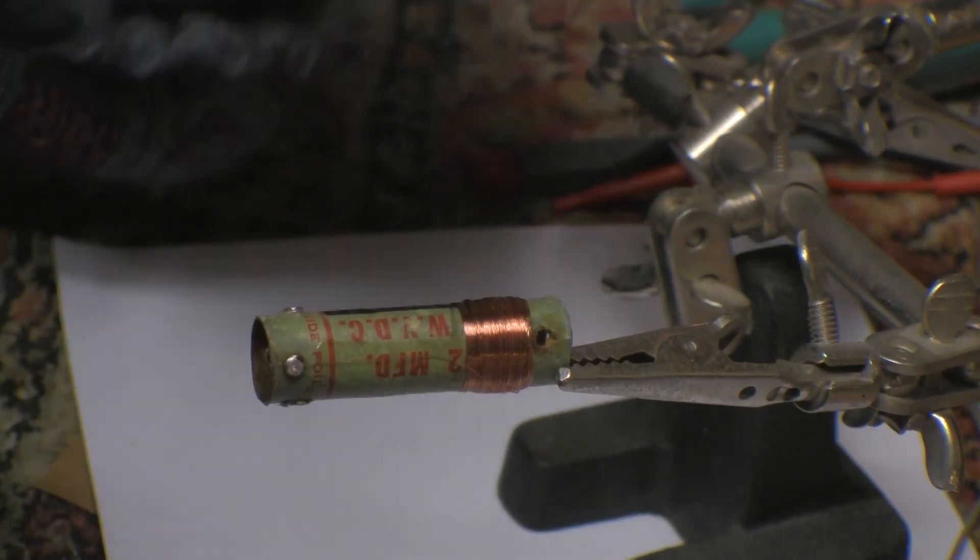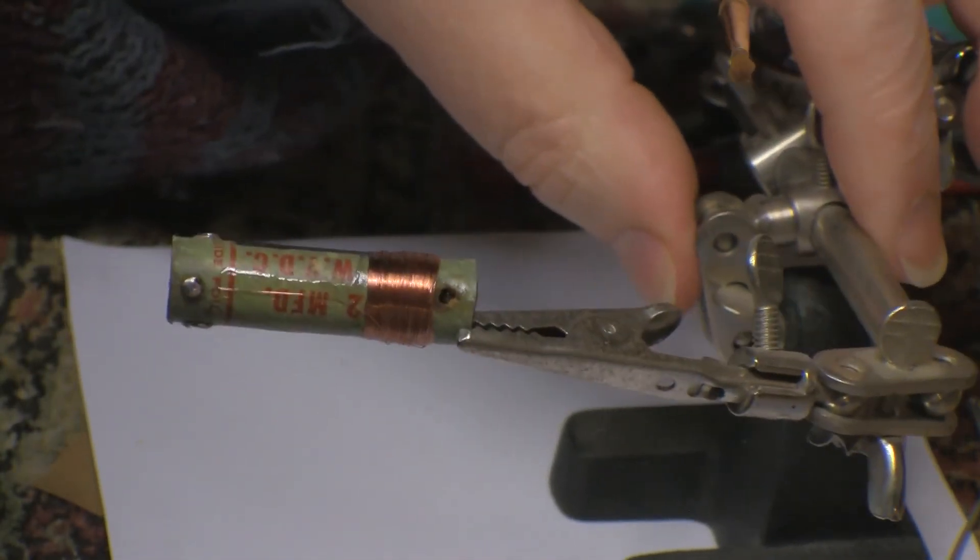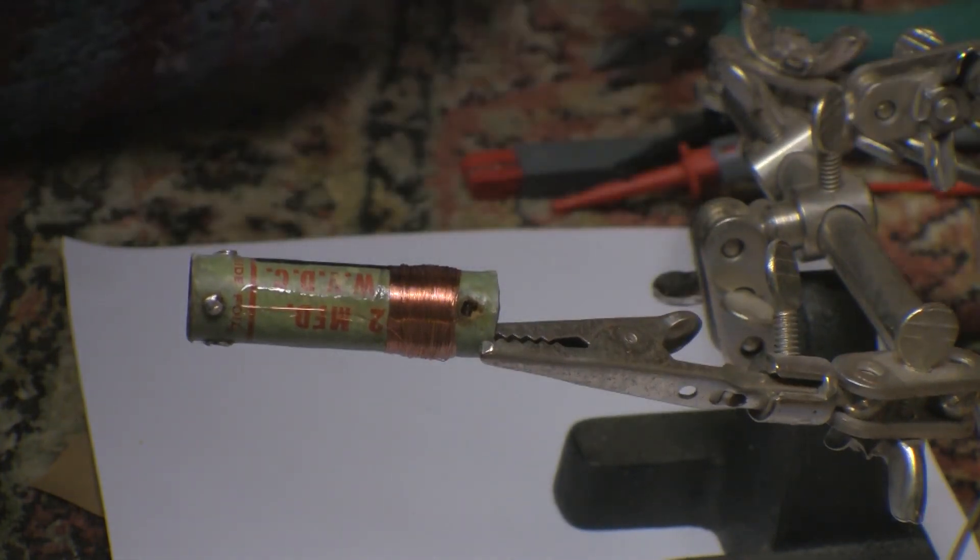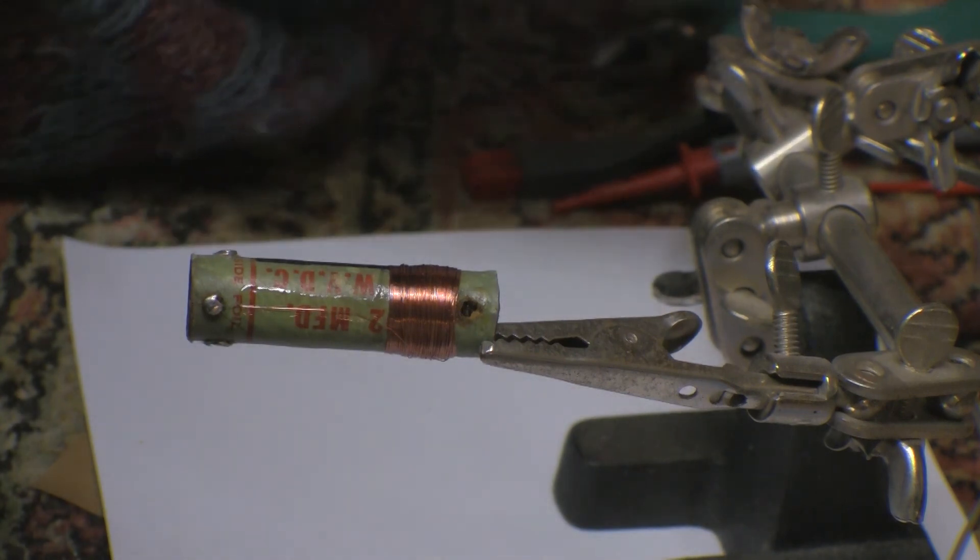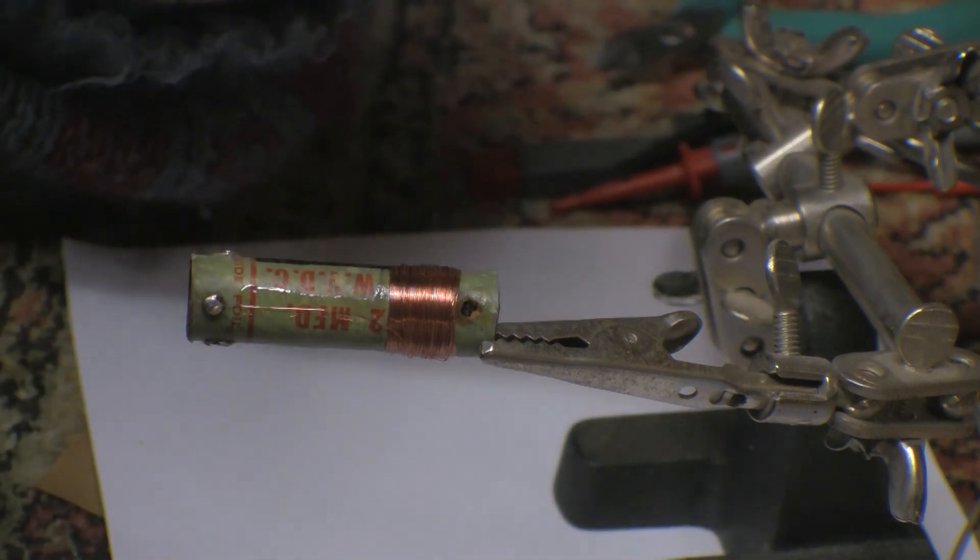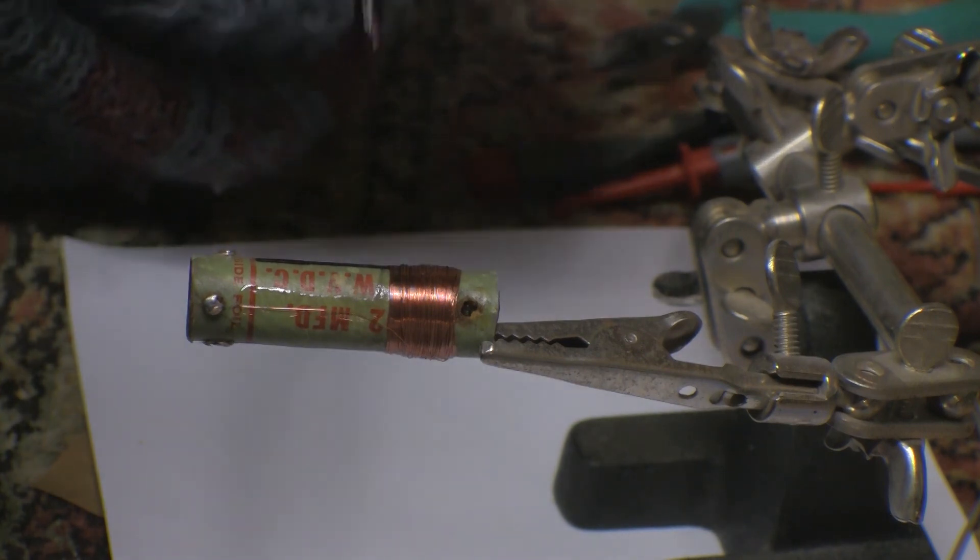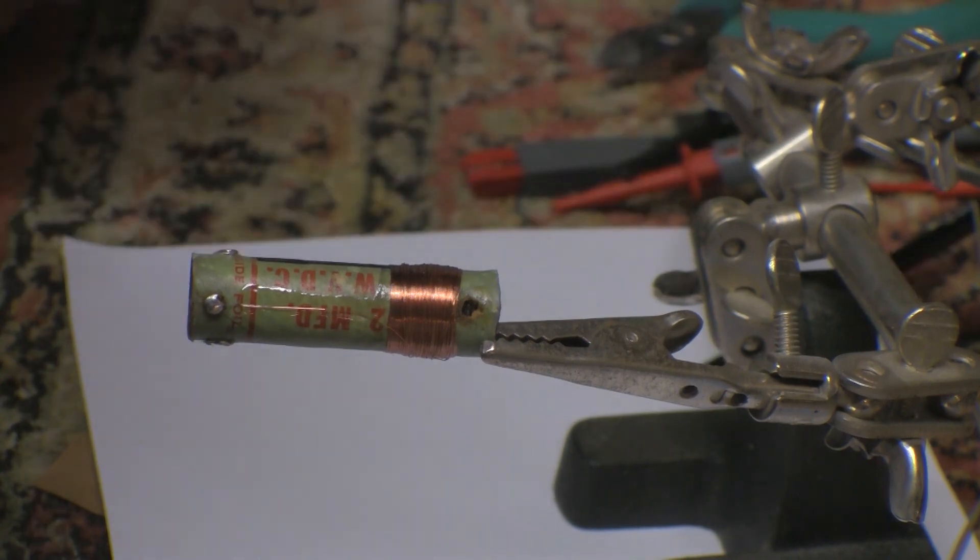So I've put plenty shellac on that and we let that all dry up. And then I need to wind the second coil down at this end. So I just want to make sure everything is going to be nice and dry and hard before I go spinning this round in my little winder again.